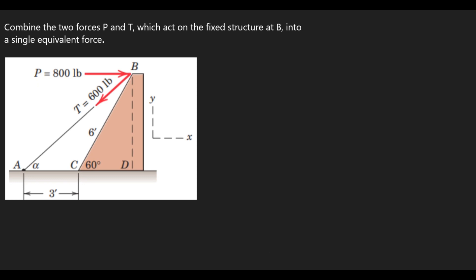In this lesson, we are going to solve this question on the screen. The question is to combine the two forces P and T which act on the framed structure at B into a single equivalent force. So what you have to do is find the resultant of these two forces, P and T.